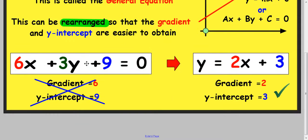So for example, this equation here in the general form, 6x plus 3y plus 9 equals 0. Well...